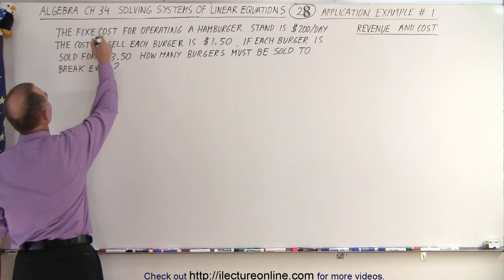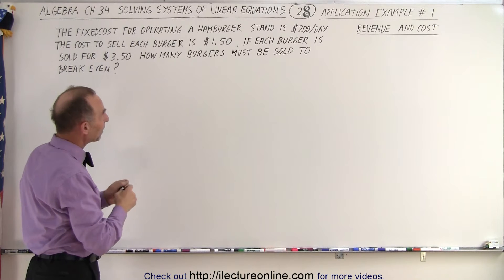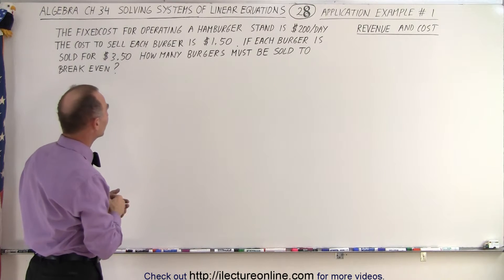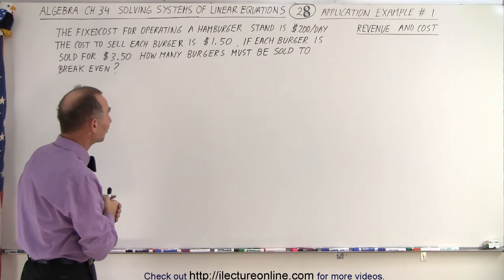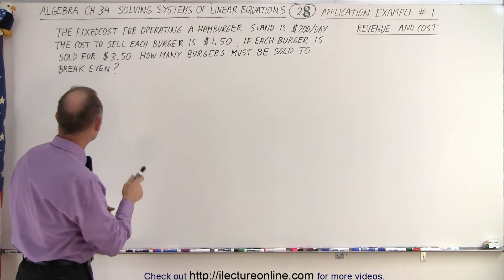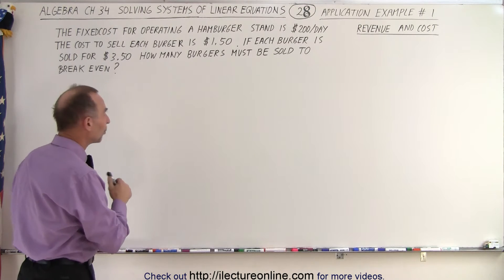Turns out two equations, two unknowns is the easy way of saying a system of linear equations. So what do we have in front of us? The fixed cost for operating a hamburger stand is $200 per day. The cost to sell each burger for ingredients and so forth is $1.50 each.